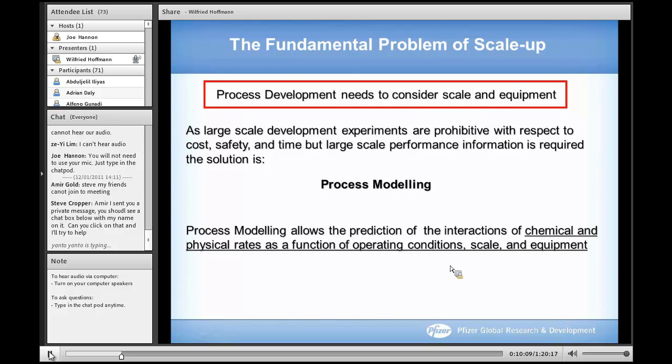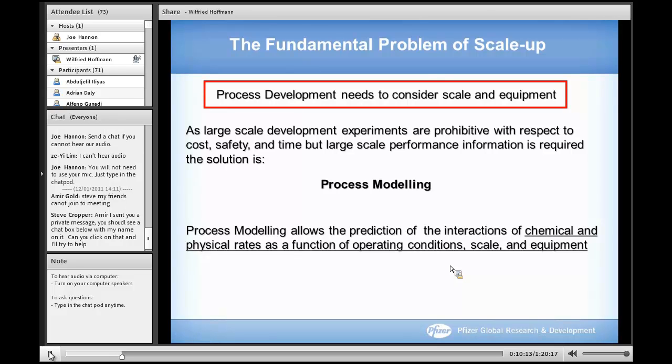Process modeling allows the prediction of the interactions of chemical and physical rates as a function of operating conditions, scale, and equipment. That is exactly what we want. We want to know when we charge 500 kilos in this equipment and we add something within two hours, what will be the outcome of our process.